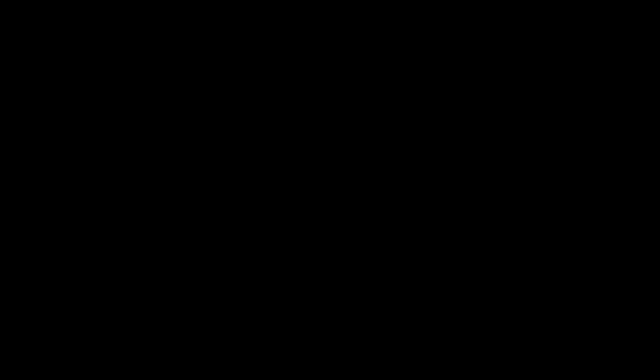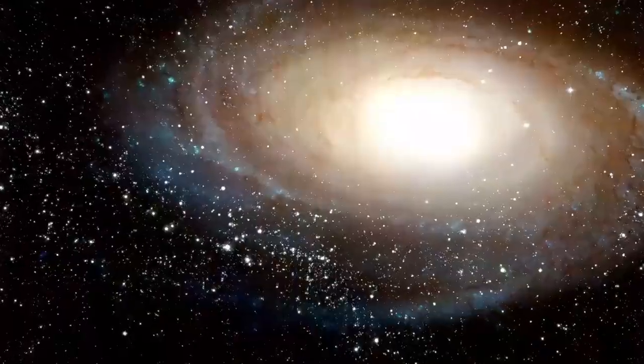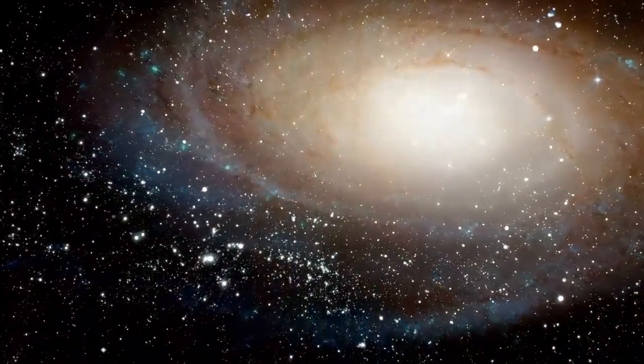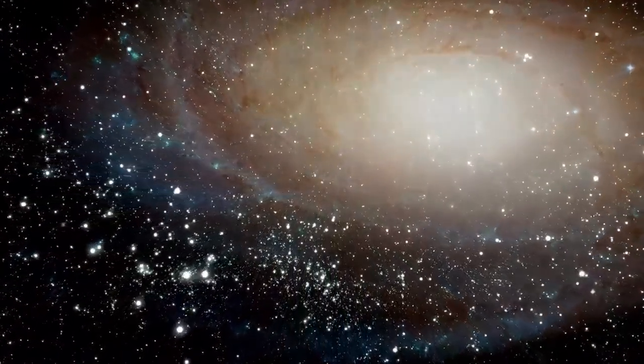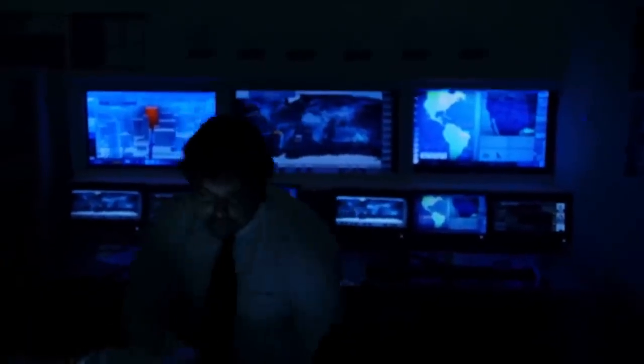Located in the Orion constellation, Betelgeuse is a red supergiant roughly 640 light-years from Earth. It's so massive that if it were placed at the center of our solar system, it would engulf Mercury, Venus, Earth, and even Mars. It's around 700 times the size of our sun and shines with such brilliance that it's easily visible to the naked eye, especially during winter months in the Northern Hemisphere.